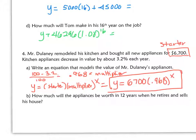How much will the appliance be worth in 12 years when he retires? Well, to figure that out, you have to go y equals 6,700 times .968 to the power of 12. What does that equal? Write that down and you'll have your last answer.